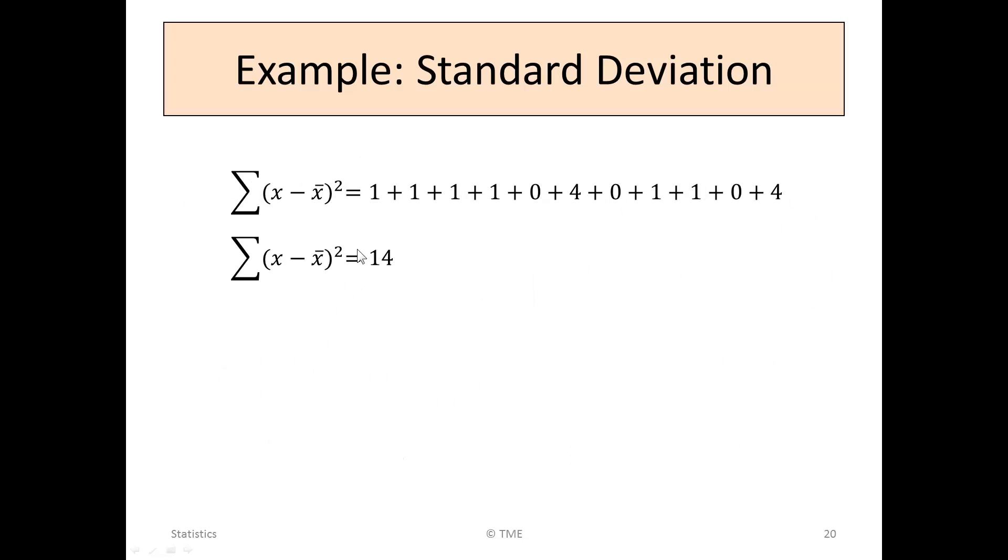Rewriting it here, or adding it up, we find that the sum of x minus x bar squared is 14.